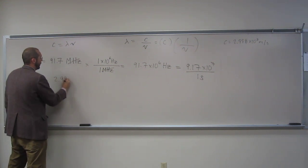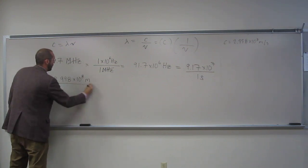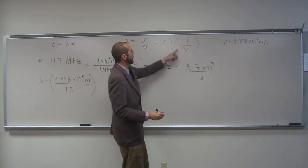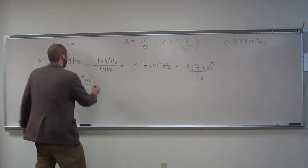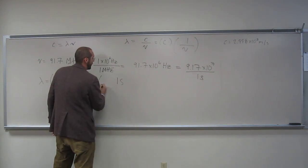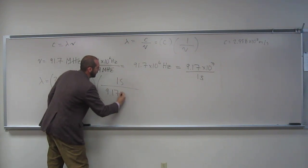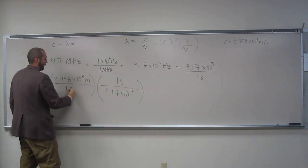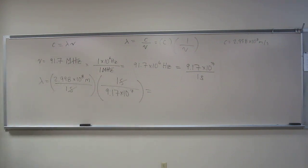So what do we have? C, 2.998 times 10 to the eighth meters per one second. And the inverse of frequency, so we're going to flip this thing over. So one second on top, 9.17 times 10 to the seventh on the bottom. Seconds cancels with seconds and gives us meters, right? So let's just calculate that.